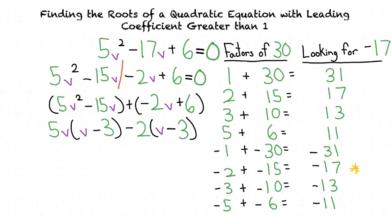This gets us 5v times (v - 3) minus 2 times (v - 3). Notice how both terms share (v - 3). This means that we can factor out (v - 3) from our quadratic equation to get (5v - 2) times (v - 3).